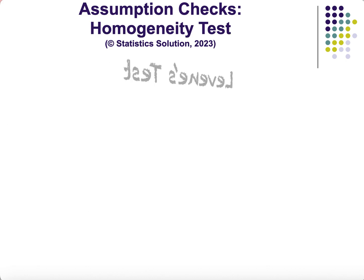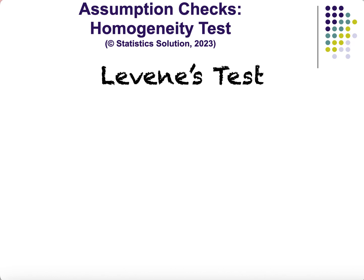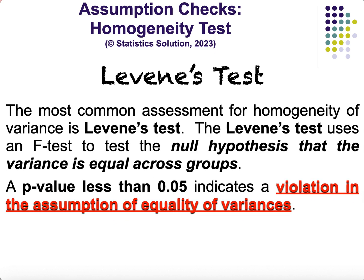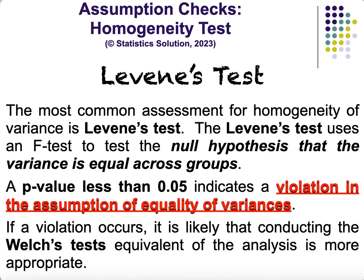Levene's test is used to determine homogeneity of variances — whether the population variances of the two categorical groups are equal. Levene's test is readily available in statistical software. If the p-value is less than 0.05, there is a violation of the homogeneity assumption, and we conduct the Welch equivalent instead of the Student's t-test.